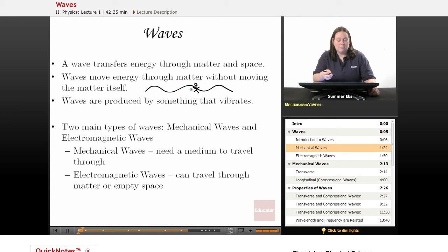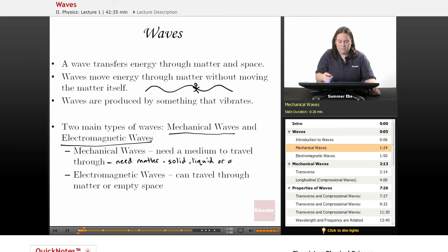The two main types of waves are mechanical waves and electromagnetic waves. Mechanical waves need a medium to travel through, meaning they need matter - it could be a solid, liquid, or gas. But mechanical waves cannot travel through empty space.